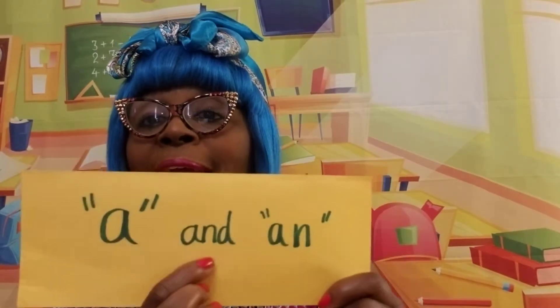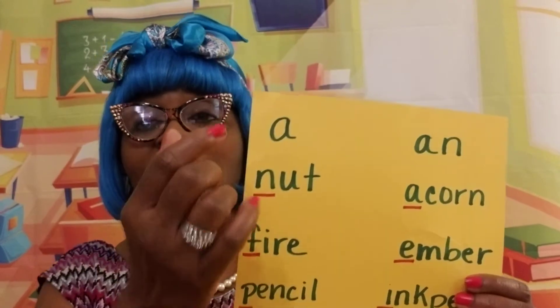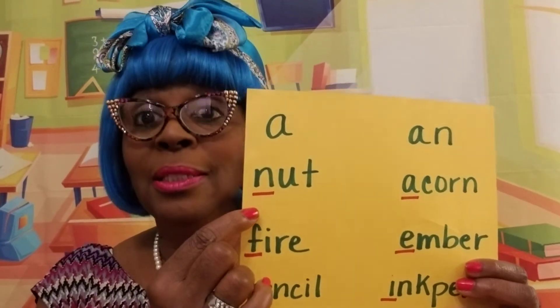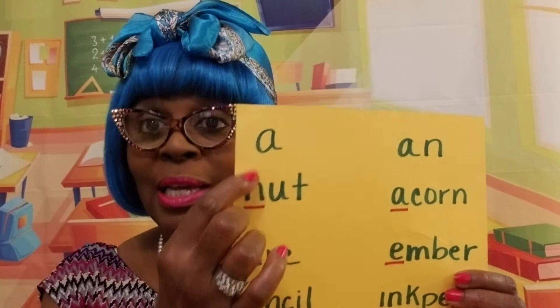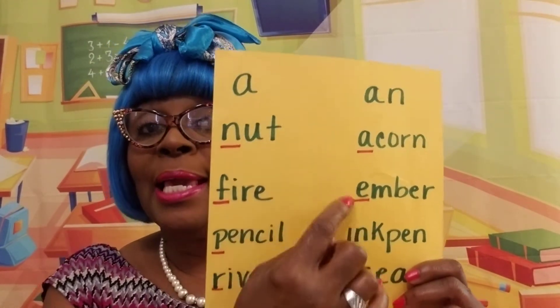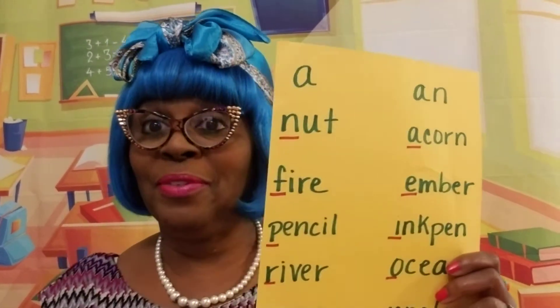But this tip is for older students. By now, you've learned how to use the indefinite articles a and an in a sentence, right? You've learned that if a word begins with a consonant, you use a in front of it. And if a word begins with a vowel — A, E, I, O, or U — you use an in front of it, right?